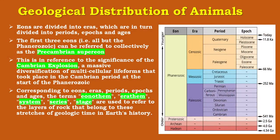The Phanerozoic Eon encompasses 541 million years of diverse abundance of multicellular life, starting with the appearance of hard animal shells in the fossil record and continuing to the present. In the diagram, this table shows eons, eras, periods and epochs. Eons are divided into eras, which are in turn divided into periods, epochs and ages. The first three eons — all but the Phanerozoic — can be referred to collectively as the Pre-Cambrian super eon, in reference to the significance of the Cambrian explosion, a massive diversification of multicellular life forms that took place in the Cambrian period at the start of the Phanerozoic.